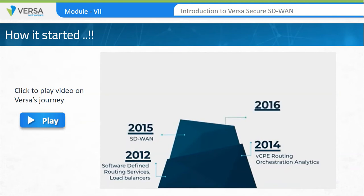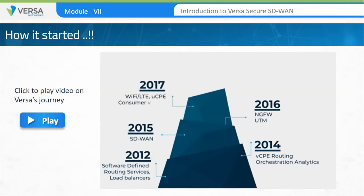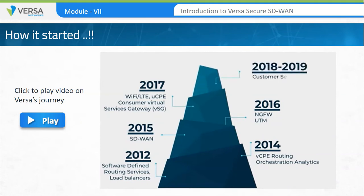Later, in 2016, Versa Networks integrated next-generation firewall and unified threat management capabilities to the overall solution. In 2017, Versa Networks integrated LTE, Wi-Fi, PPPoE, and universal CPE features into the SD-WAN offering. In 2018, Versa Networks introduced the self-service portal, mobile app provisioning, and cloud services gateways.